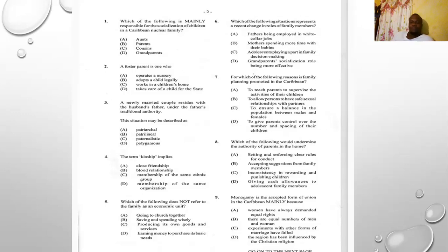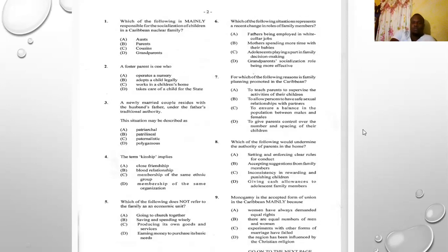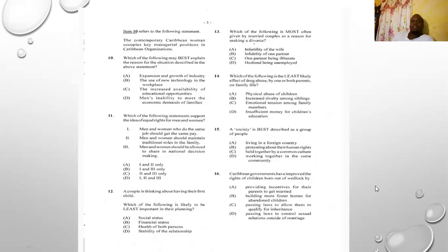Number nine: monogamy is the accepted form of union in the Caribbean. Options: A) women have always demanded equal rights, B) there are equal numbers of men and women, C) experiments with other forms of marriage have failed, D) the region has been influenced by the Christian religion. The answer is D — the region has been influenced by the Christian religion, so we believe in marriage between one man and one woman.